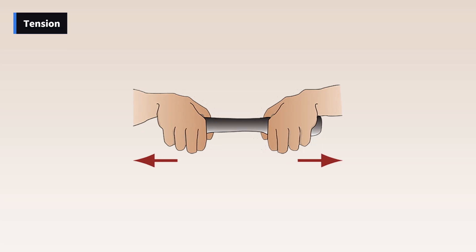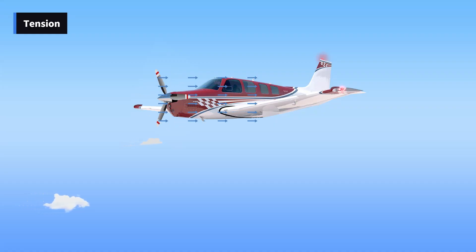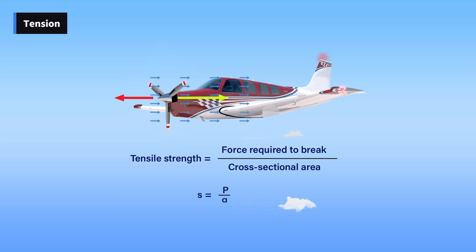Tension is the stress that resists a force that tends to pull something apart. The engine pulls the aircraft forward, but air resistance tries to hold it back. The result is tension, which stretches the aircraft. The tensile strength of a material is measured in pounds per square inch and is calculated by dividing the load required to pull the material apart by its cross-sectional area.